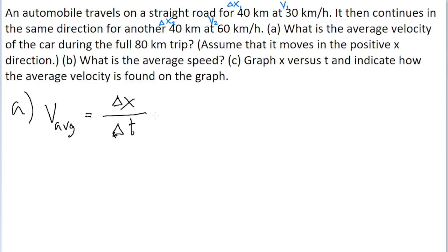The problem explicitly tells us what delta x is. It's an 80 kilometer trip, but the time is going to be more tricky because we're not told the total time or even the individual time for the individual legs of the journey. We have to figure that out using the speed equation.